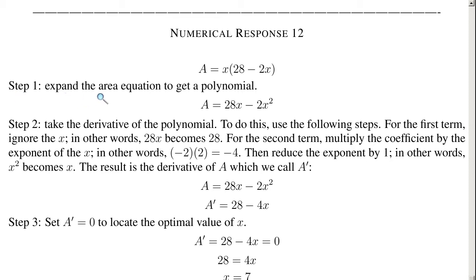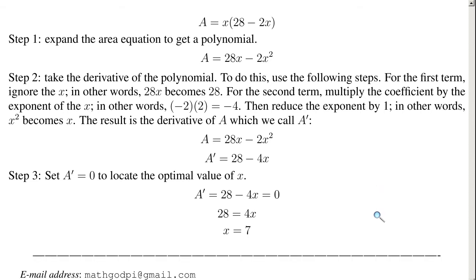Step one, expand the area equation to get a polynomial. Simple enough. Just multiply the x by 28 and the x into this to get 28x minus 2x squared. So that's simple.